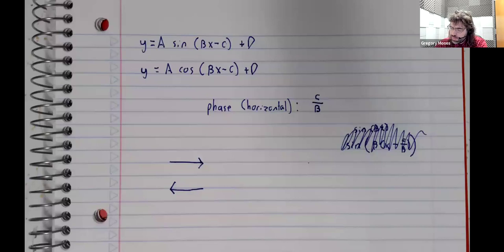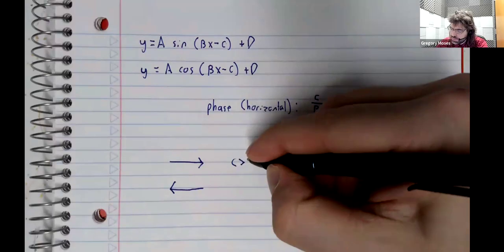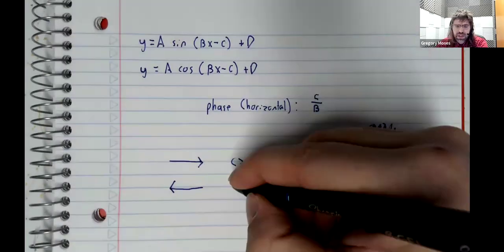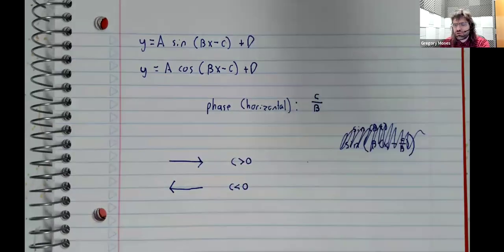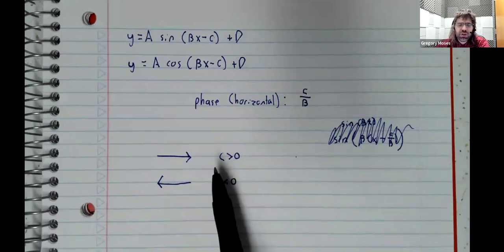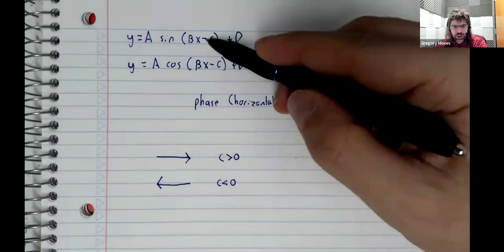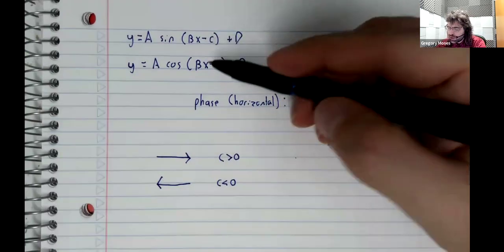If C is positive, it goes to the right. If C is negative, it goes to the left. But you have to be careful—the way sinusoidal functions are defined in the textbook, there's a built-in subtraction. So if you see, for example,